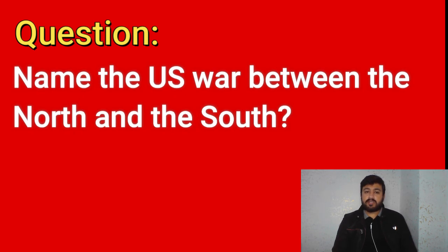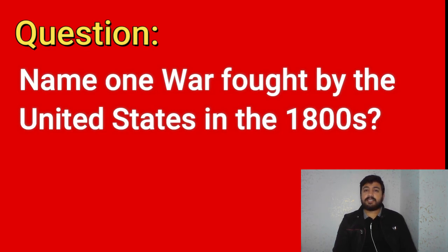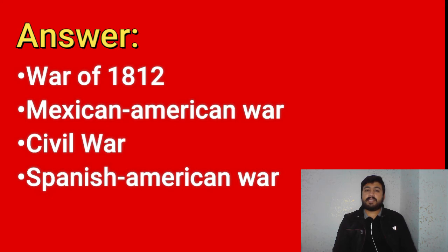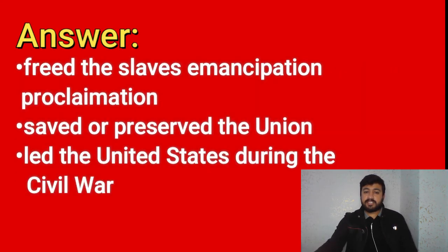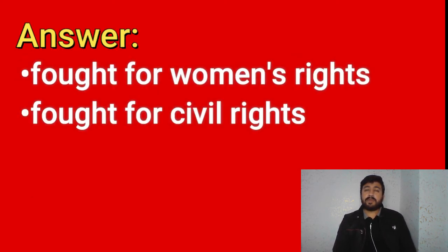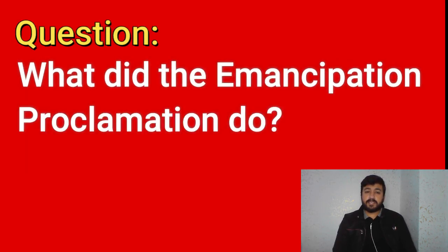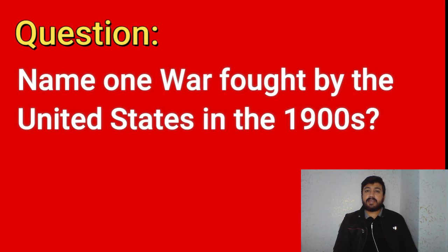Name the U.S. war between the North and the South. The Civil War, the War Between the States. Name one war fought by the United States in the 1800s: War of 1812, Mexican-American War, Civil War, Spanish-American War. What was one important thing Abraham Lincoln did? Freed the slaves — Emancipation Proclamation — saved or preserved the Union, led the United States during the Civil War. What did Susan B. Anthony do? Fought for women's rights, fought for civil rights. What did the Emancipation Proclamation do? Freed the slaves, freed slaves in the Confederacy, freed slaves in the Confederate states, freed slaves in most southern states.